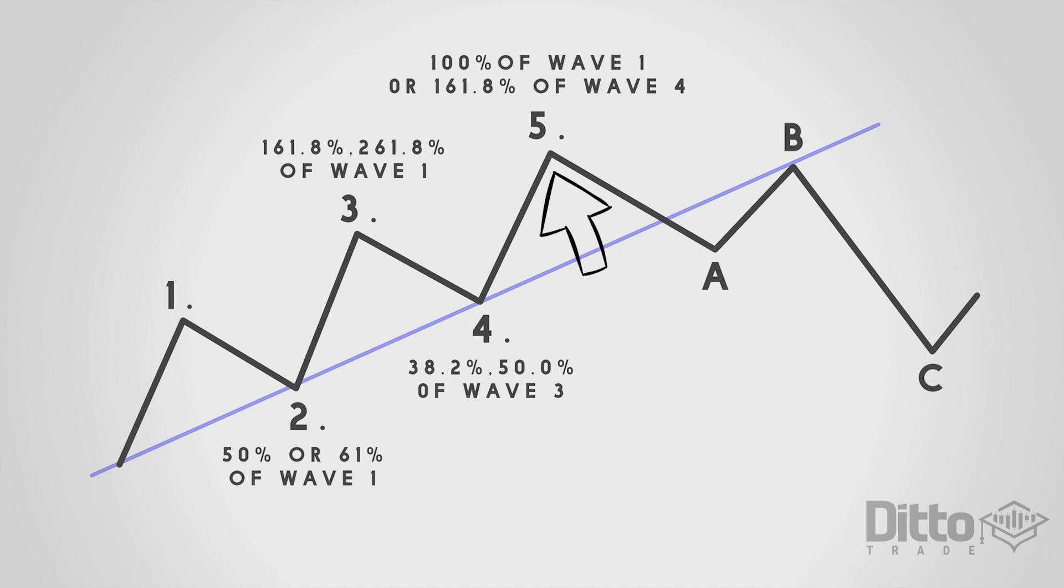The correction. Wave A. Corrections are generally harder to identify than impulse moves. In wave A of a bear market, the fundamental news is still positive. The behavior seen is similar to that of the beginning of wave one. We may see increased volume and possibly a turn higher in open interest. Our video explaining open interest is a very good lesson in regards to this.